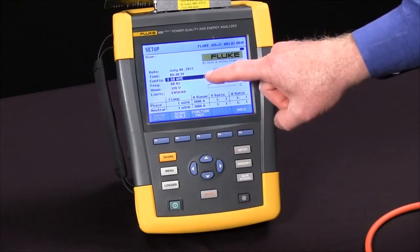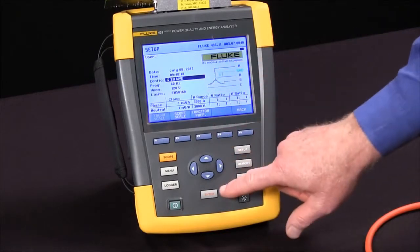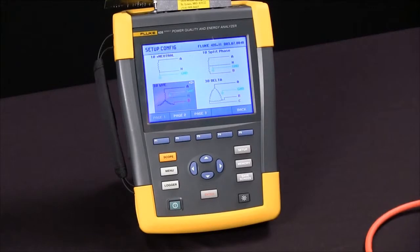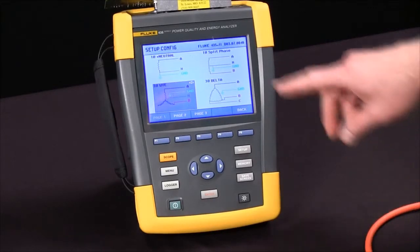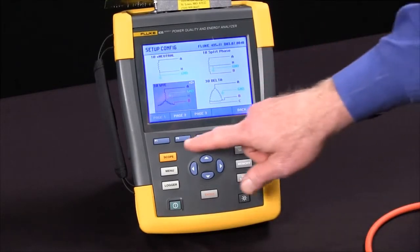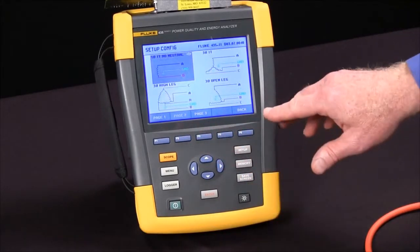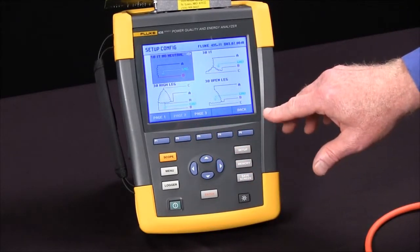For the power network configuration, we highlight config, hit the enter key, and we'll see a list of the different power networks that we can choose from. You can see four on this screen with the function keys that bring up additional pages for those strange configurations you may run into from time to time.